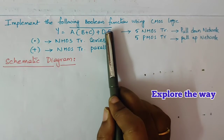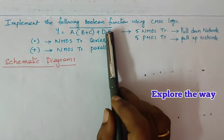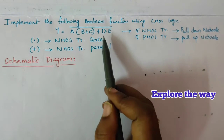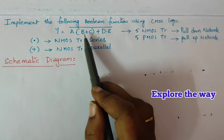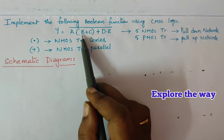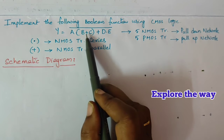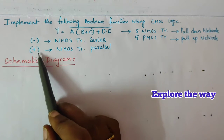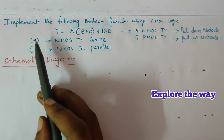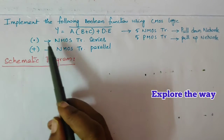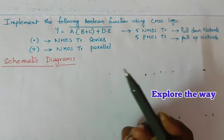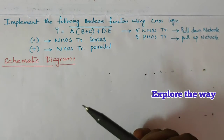Since the function is in whole complemented form, we can implement it directly. In this logic function, start with the term which is in brackets. The term in brackets is b plus c. Between b and c we have plus, so nMOS transistors are connected in parallel. Whenever we have a dot operation, nMOS transistors are connected in series. For pMOS transistors it is the opposite.